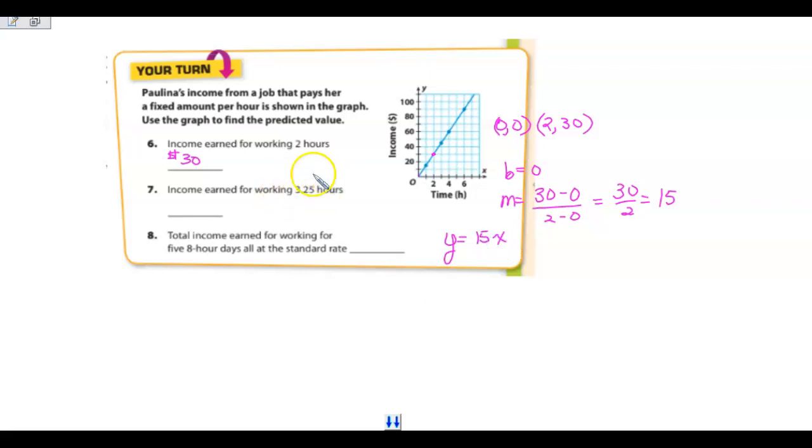Now, let's determine what 3 and a quarter hours are going to be. So I'm going to take my y equals 15 times 3.25. And that's going to tell me how much I earned there. If you said $48.75, that is correct. $48.75.